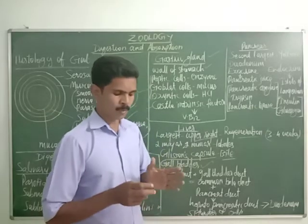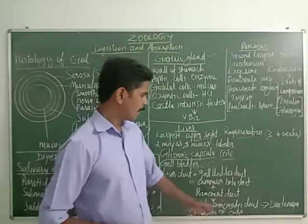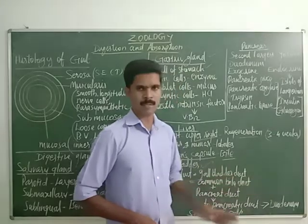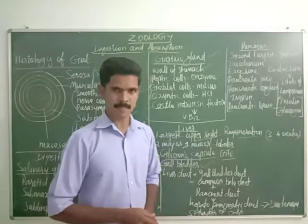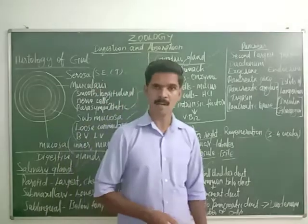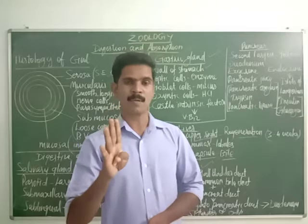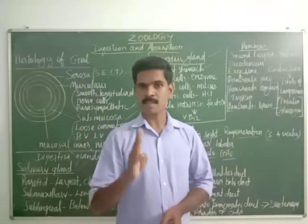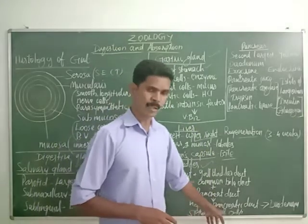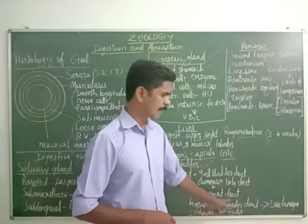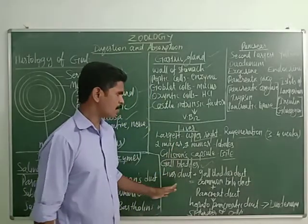At the junction where the hepatopancreatic duct opens into the duodenum, a sphincter muscle is present. The name of this sphincter is called the sphincter of Oddi. So in the alimentary canal there are four types of sphincter muscles, and the last one is the sphincter of Oddi.